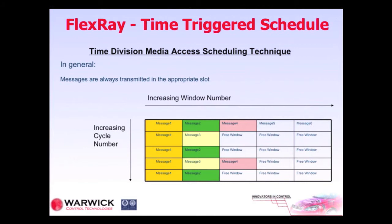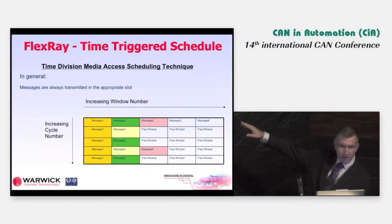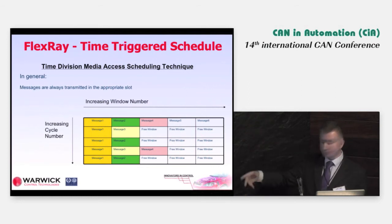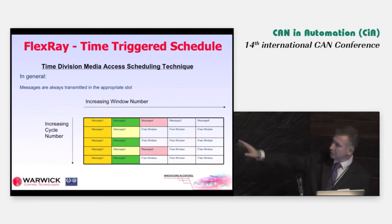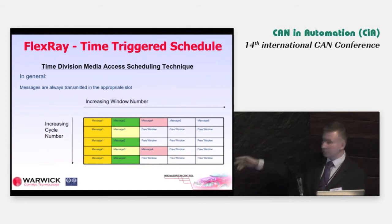FlexRay is a time-triggered protocol, and its scheduling methodology is referred to as TDMA — time-division multiple access. The key thing is you have an exclusive window of time with which an ECU can transmit a message, which might contain, for example, wheel speed information. We've got a number of slots or windows going across the top, and a number of cycles. The whole communication schedule is multiplexed this way — you go across: message one, message two, message four, message five, message six, then down to the next row, and execute the communication schedule.